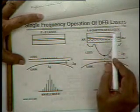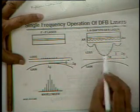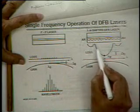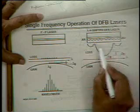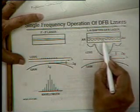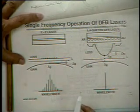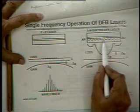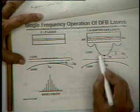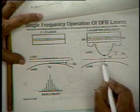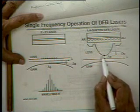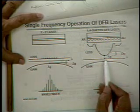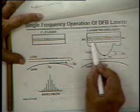In the DFB — distributed feedback — laser, because of this periodic grating, the loss is no longer flat. The loss is lowest here and high here, and notice that there is a λ/4 shift to eliminate degeneracy between the waves going in opposite directions. The main difference is that if you look at the gain and the loss, the gain will be more than the loss just over a small intersection, so you will have single frequency. This grating is acting like a mode filter, selecting one particular mode because the loss spectrum is changed due to this λ/4 structure.